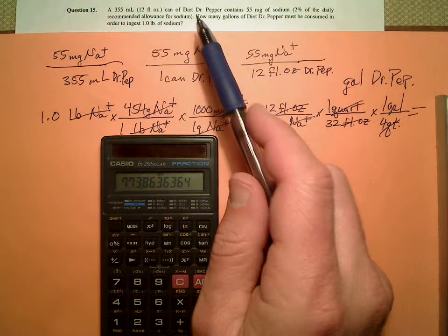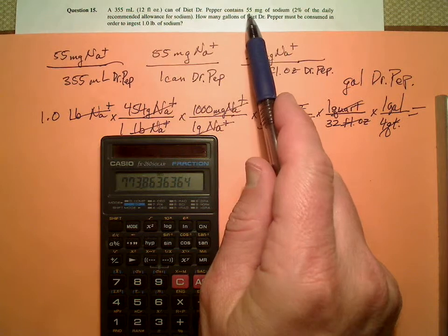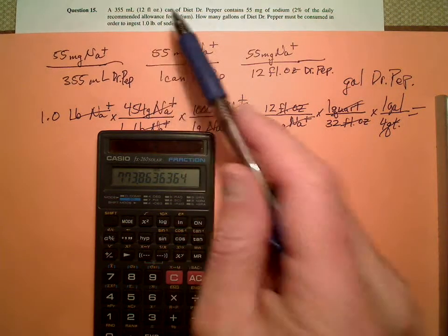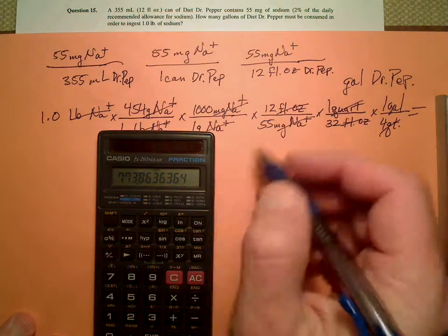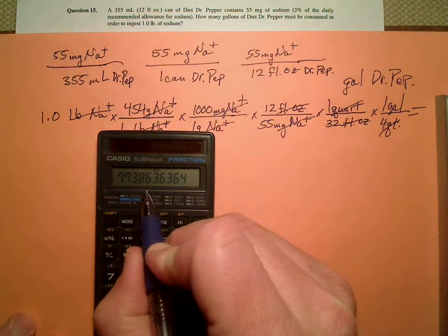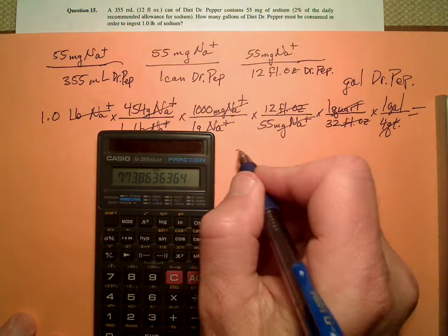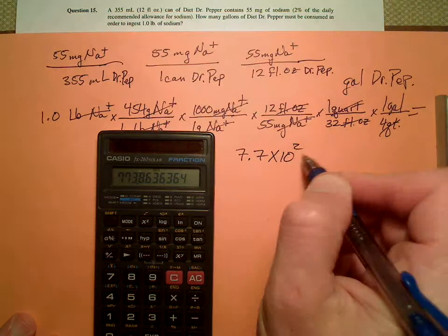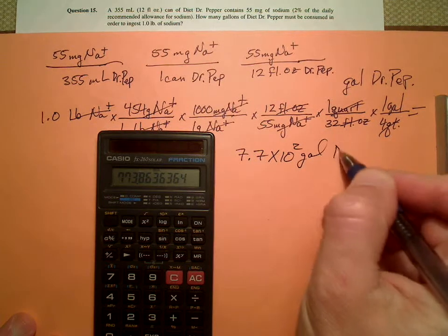How many sig figs do I have? 55, so that's 2. My volume is good for 2. So it looks like 2 sig figs. That's 773 gallons, so I have to put that in 2 sig figs with that ambiguous zero, so it's going to have to be 7.7 times 10 to the second gallons of Dr. Pepper.